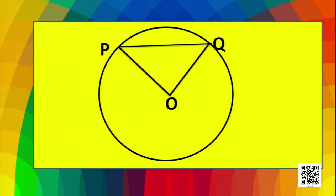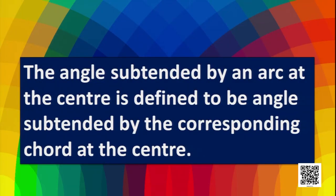Here you have a picture. PQ is a chord and both the end points are joined to O. So, the angle POQ is said to be the angle subtended by the chord PQ at the center. Also, this angle is subtended by the minor arc PQ. On its opposite side, the major arc also subtends an angle that is the reflex of angle POQ. The angle subtended by an arc at the center is defined to be the angle subtended by the corresponding chord at the center. The minor arc subtends angle POQ and the major arc subtends the reflex of that angle.